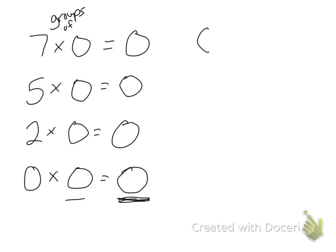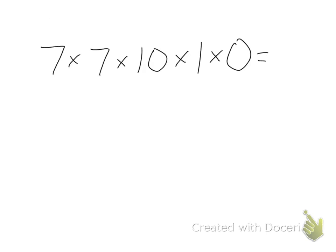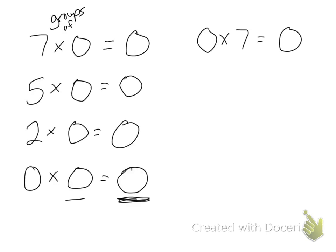That's the same as if I did 0 times 7, my answer is still 0. Or 0 times 5. Anytime I multiply by 0, my answer is always 0.